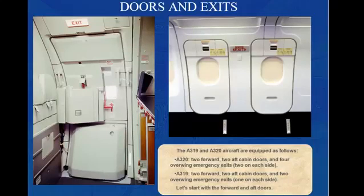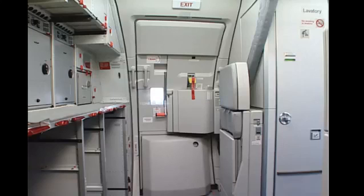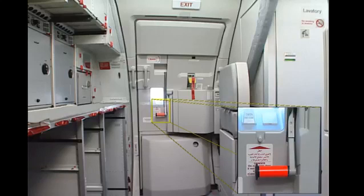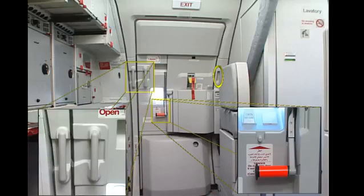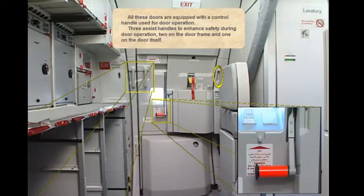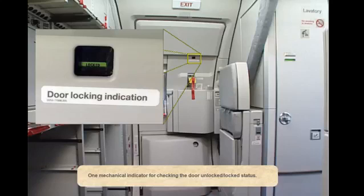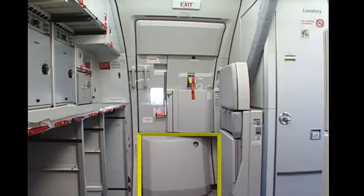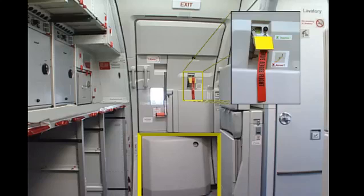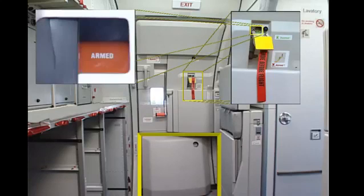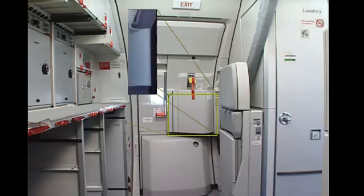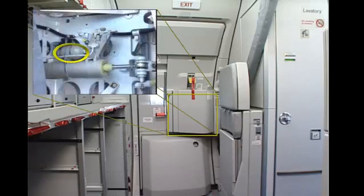All forward and aft doors are equipped with a control handle used for door operation, three assist handles to enhance safety during door operation — two on the door frame and one on the door itself — and one mechanical indicator for checking the door unlocked and locked status. An evacuation device is stowed in a container on the lower part of the door, and a control lever is used to arm or disarm the device. A disarmed/armed control window indicates the status. The door support arm houses the emergency opening cylinder and the pressure gauge.